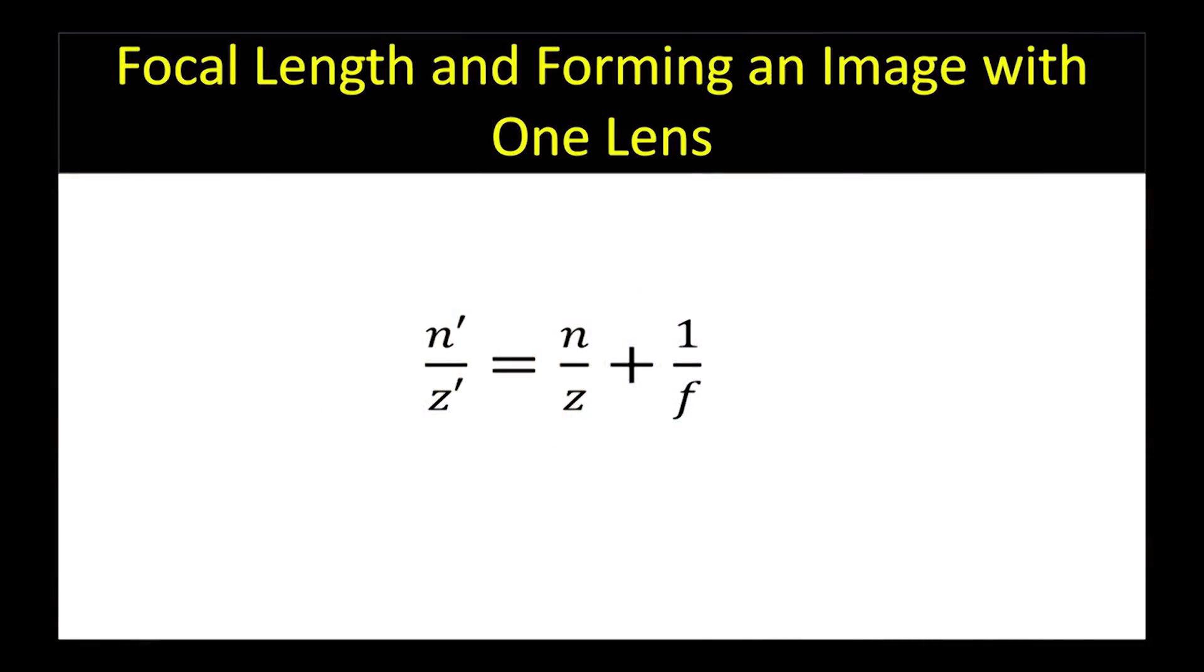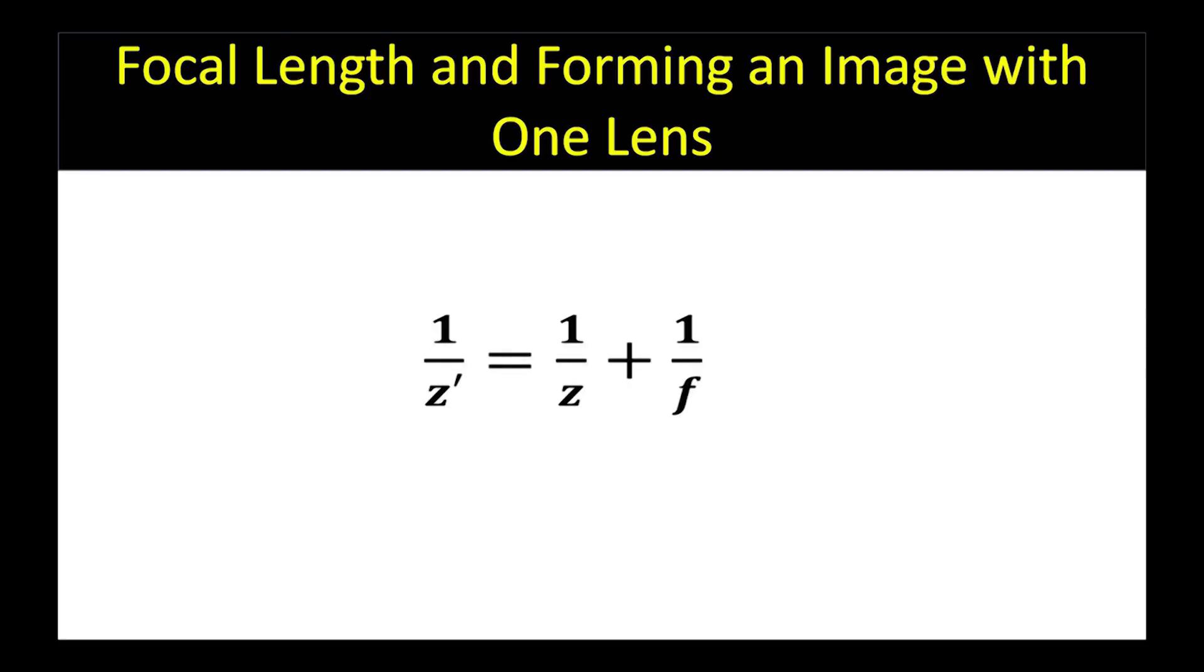In this equation, N prime is the refractive index of the medium between the lens and the image plane, and N is the refractive index of the medium between the object and the lens. Typically, we're working in air, so N and N prime both equal 1.